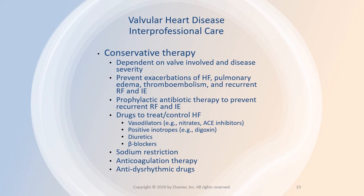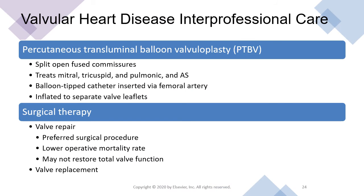Overall treatment focuses on preventing exacerbations of heart failure, acute pulmonary edema, thromboembolism, and recurrent rheumatic fever and infective endocarditis. Heart failure is treated with vasodilators, positive inotropes, beta blockers, diuretics, and a low-sodium diet. Arterial dysrhythmias are common and treated with calcium channel blockers, beta blockers, anti-dysrhythmic drugs, or electrical conversion. Anticoagulant therapy is used in patients with atrial fibrillation to prevent systemic or pulmonary emboli.